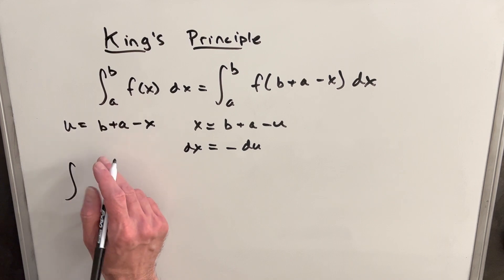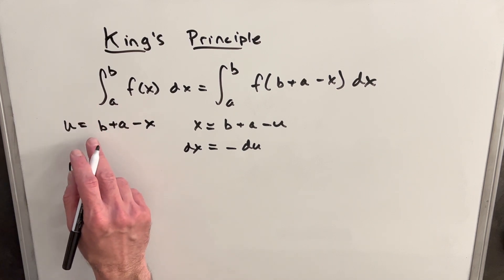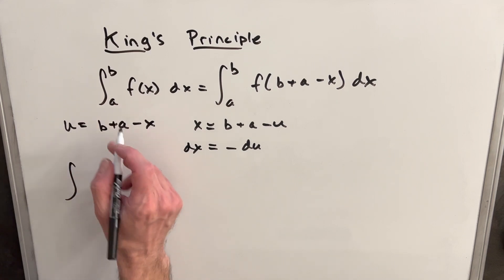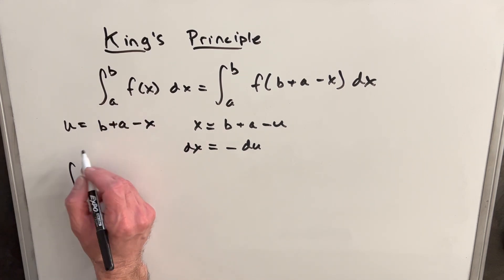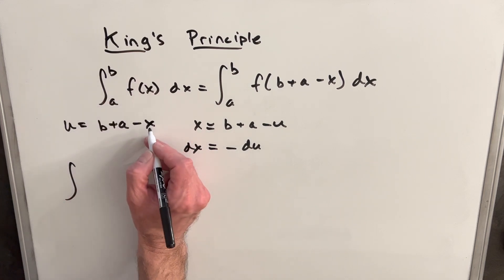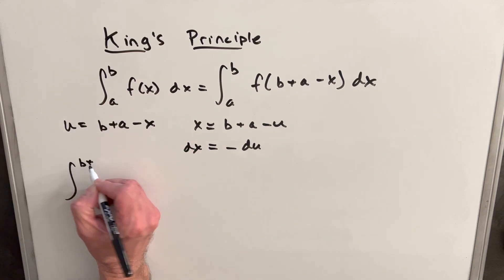Okay, now we'll make our substitution, so we need to first update the limits of integration here. So we'll plug in a and b, and you'll notice if we have, for our top limit, we plug in the b here, we have b + a - b, but the b's cancel, we just have an a. And then similarly, at the bottom, we plug in an a, we're going to have b + a - a, and so we're just left with a b.